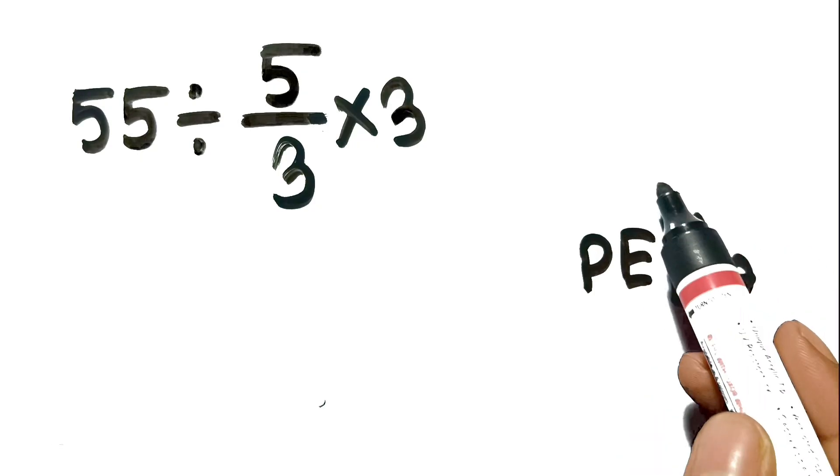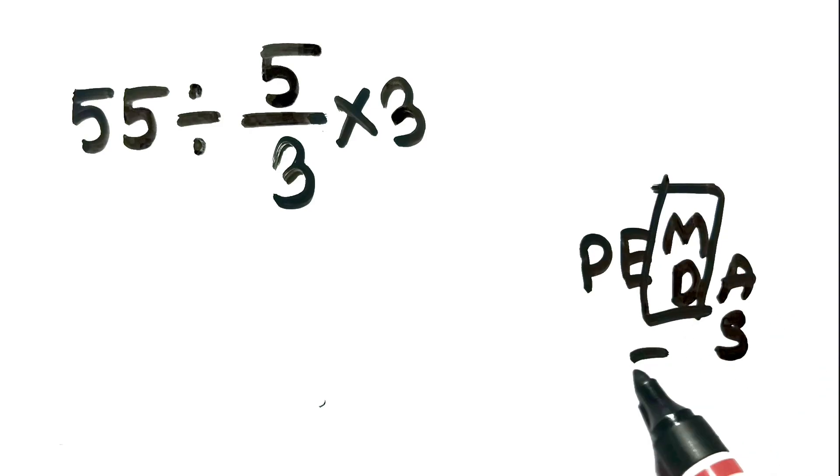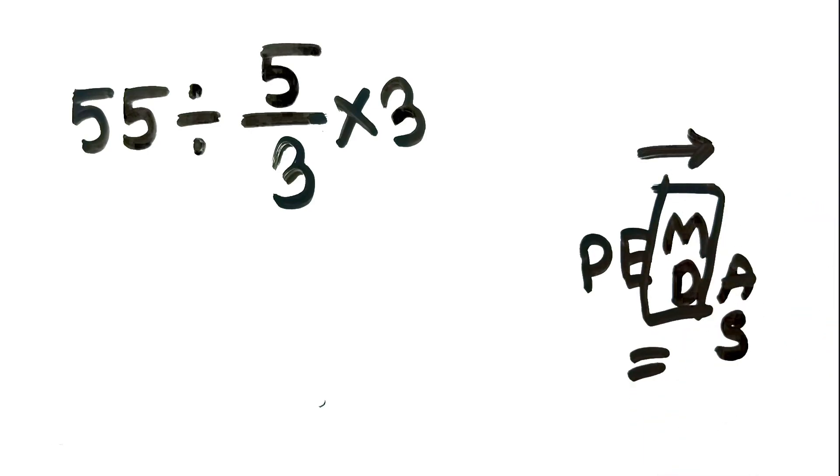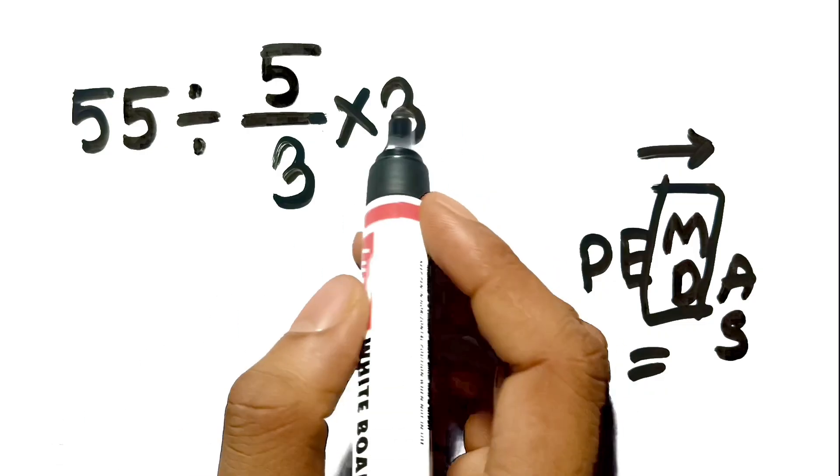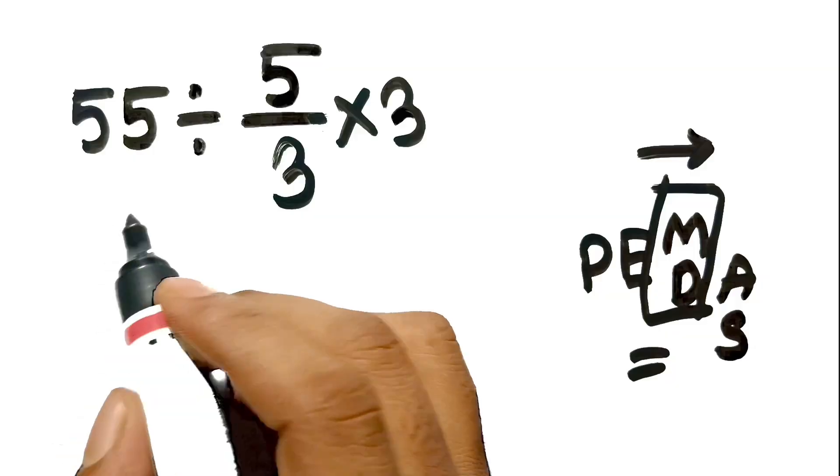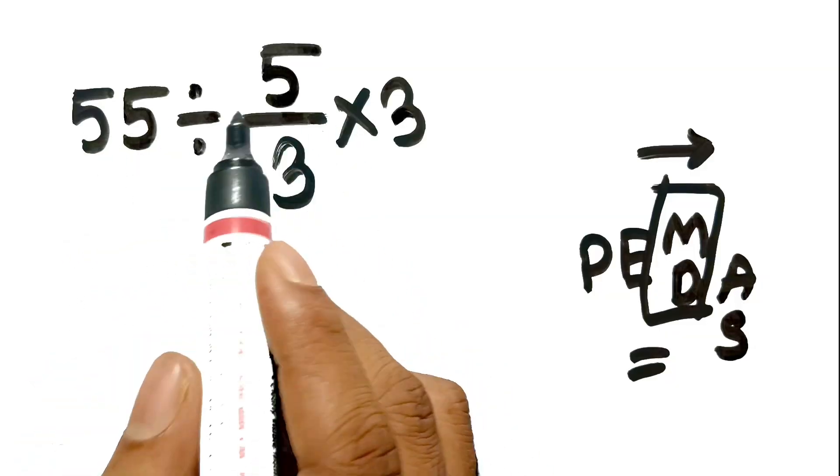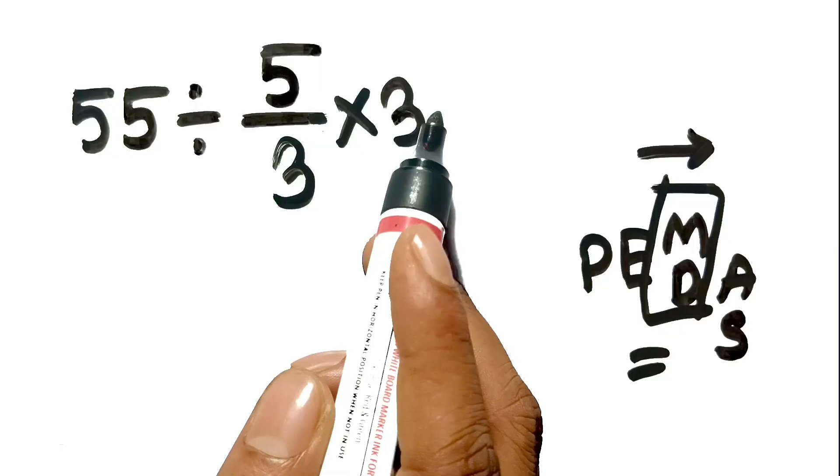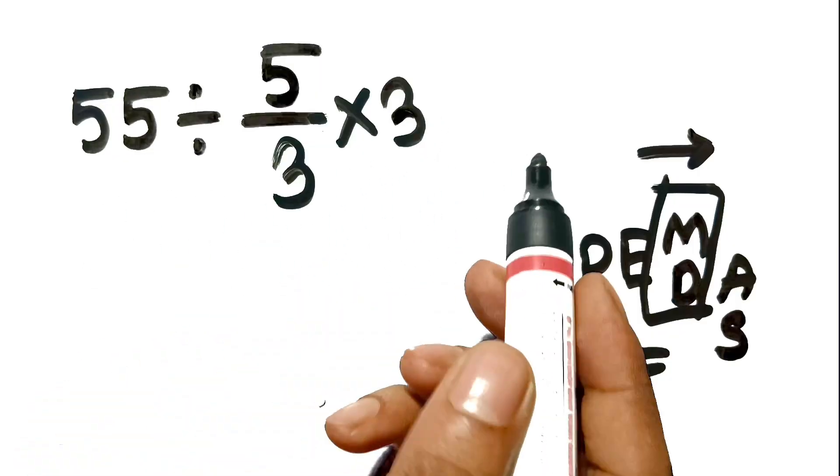Remember that multiplication and division have equal priority, and we have to work from left to right. You cannot jump to the end of the problem just because the numbers look like they match. In this expression, we have two main operations: a division by a fraction and a multiplication by a whole number.